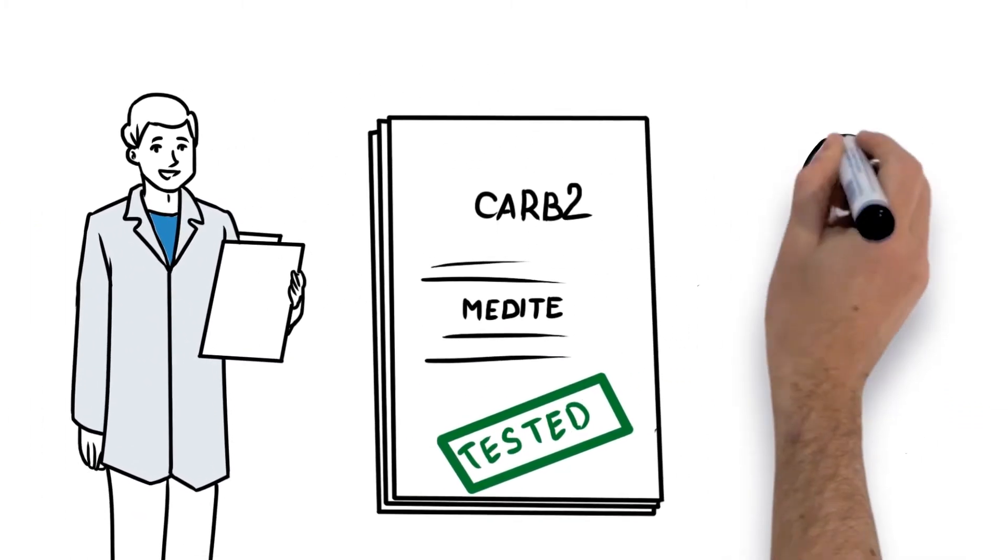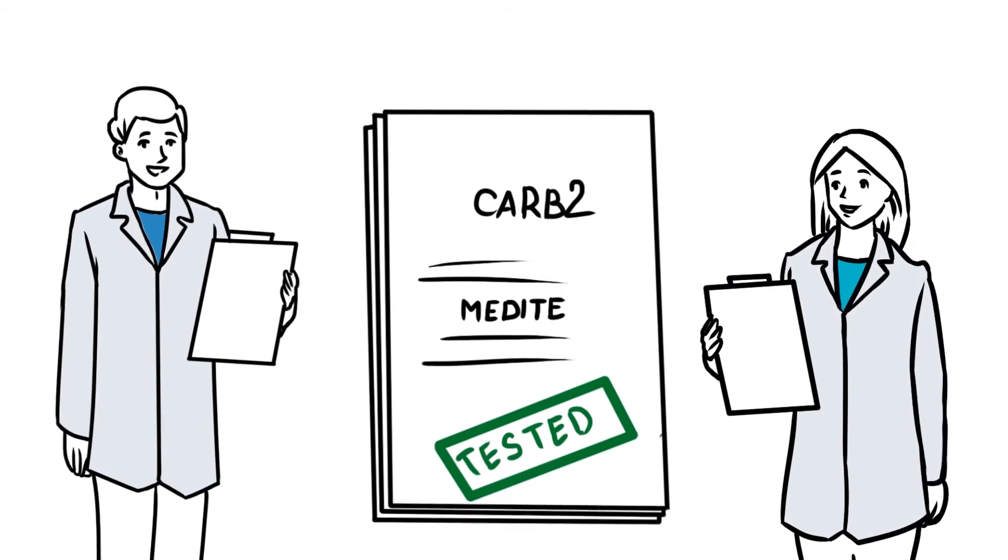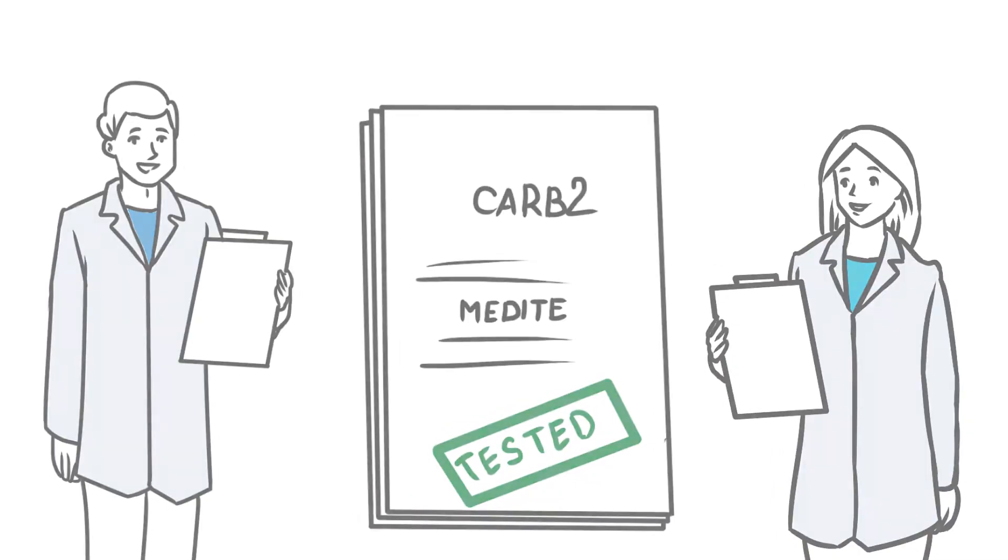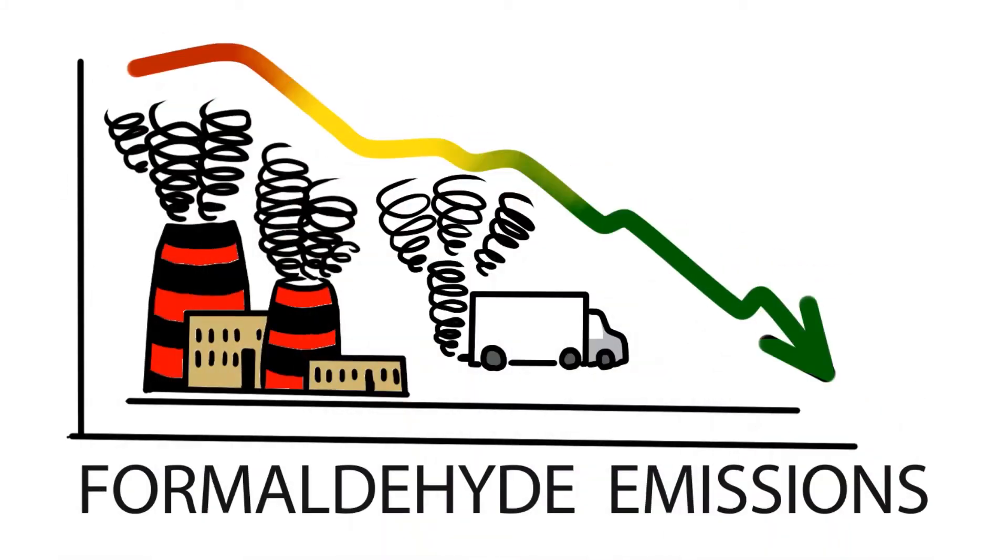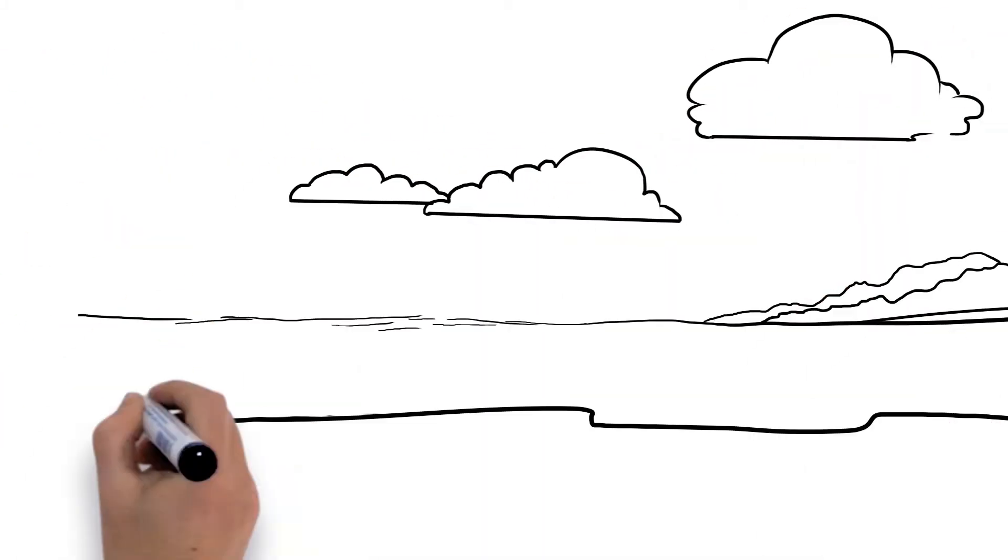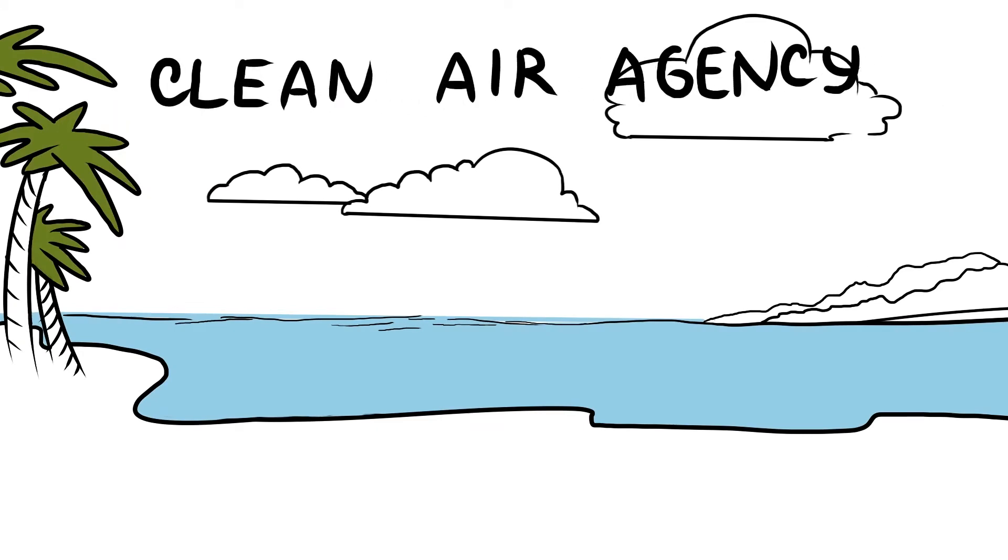CARB2 is a certification process instituted by the Californian Air Resources Board to reduce formaldehyde emissions and protect the public from airborne toxic contaminants. Hence CARB has become known as the Clean Air Agency.